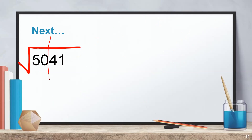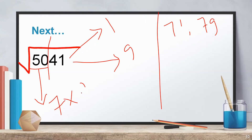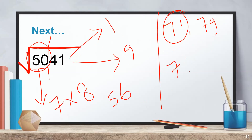Next: √5041. Ends with 1, so the answer ends with 1 or 9. First pair is 50; the perfect square below 50 is 49, which is 7². Choices are 71 or 79. Multiply 7 × 8 = 56. Since 50 is less than 56, choose the lower answer. √5041 = 71.